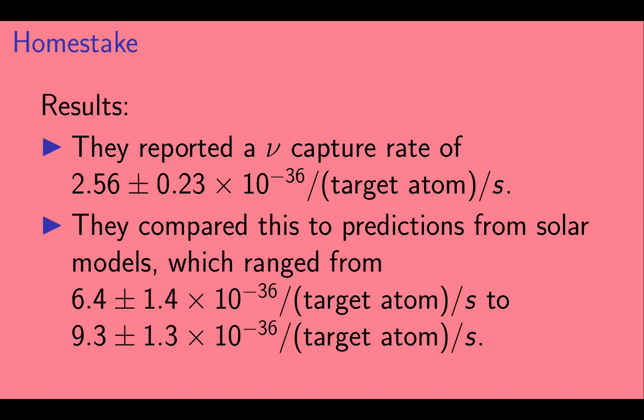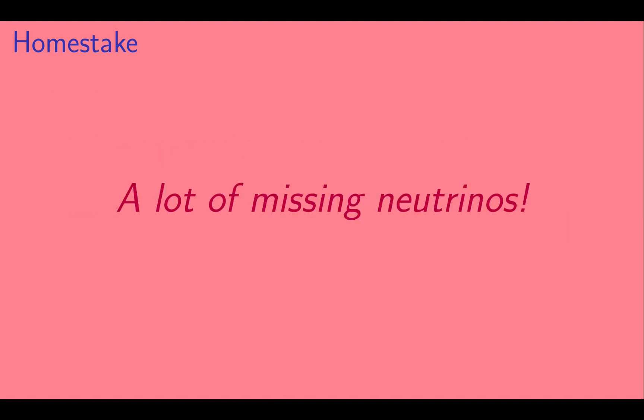Let's look at their results. They reported a neutrino capture rate of 2.56 plus or minus 0.23 times 10 to the minus 36 per target atom per second. They compared this to predictions from solar models, which ranged from 6.4 to 9.3 times 10 to the minus 36 in the same units. So, the observed rate was much lower than expected. Basically, there were a lot of missing neutrinos.